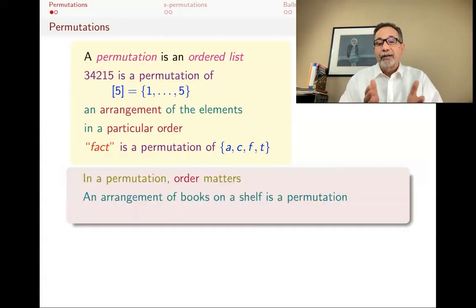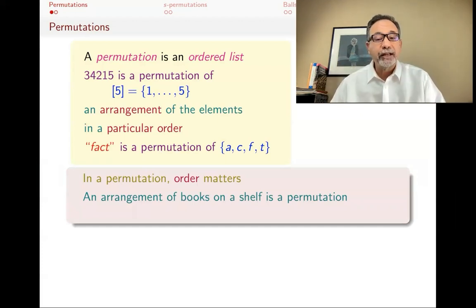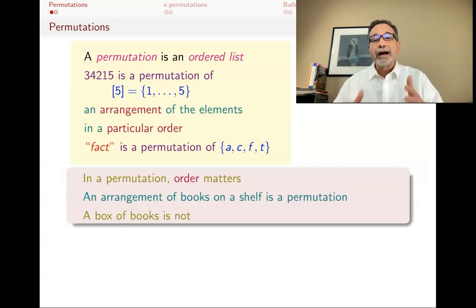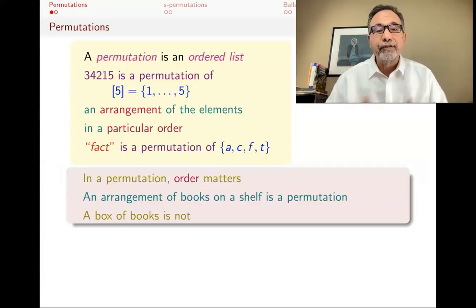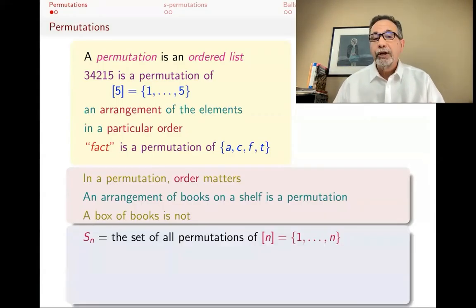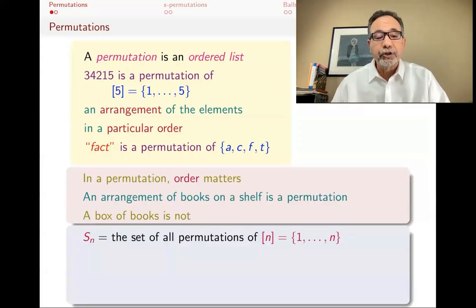An arrangement of books on a shelf is a permutation. For example, if you have 10 books and you want to arrange them on a shelf, then you've got a permutation on your hands. On the other hand, if you pile the books in a box, then you don't have a permutation because you're just saying you've got a box of books — the order doesn't really matter. One notation for the set of all permutations of one through N is SN. This comes from group theory; it stands for the symmetric group of degree N.